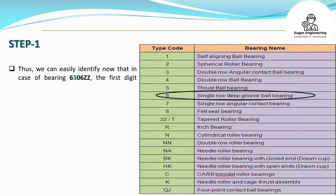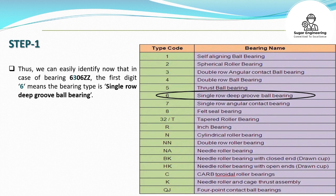Step 1: We can easily identify that in the case of bearing 6306ZZ, the first digit 6 means the bearing type is a single row deep groove ball bearing.